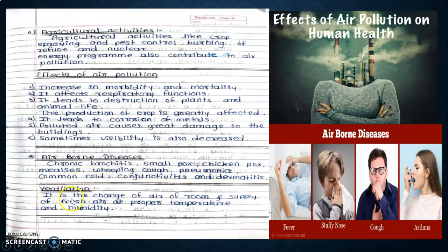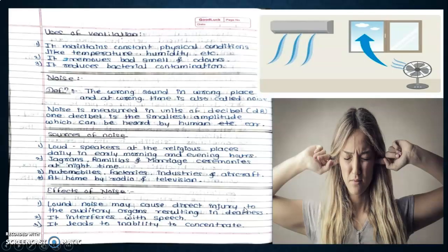Ventilation is a change of air in a room and supply of fresh air at proper temperature and humidity. Proper ventilation maintains constant physical conditions like temperature and humidity, removes bad smells and odors, and reduces bacterial contamination as well.